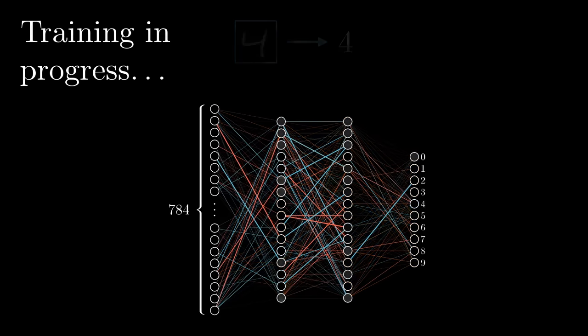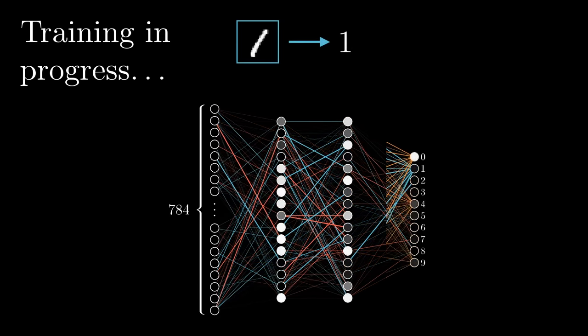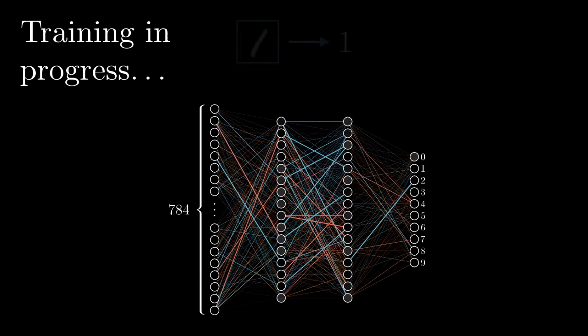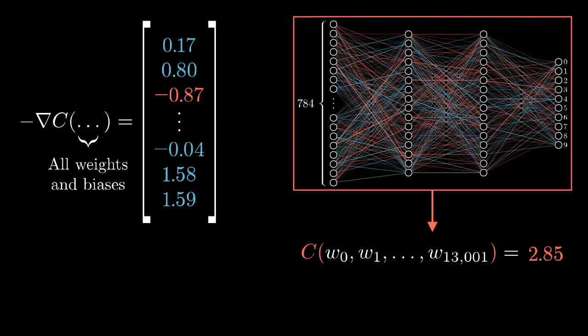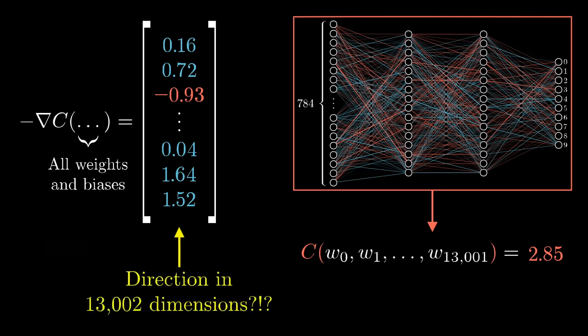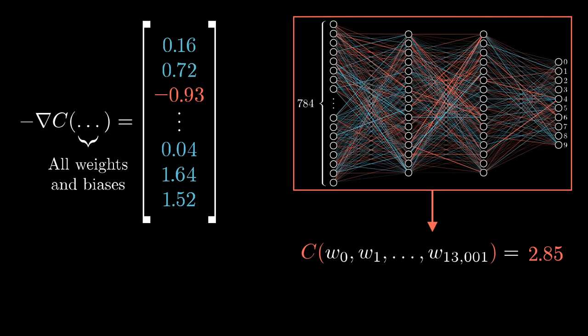Backpropagation, the topic of this video, is an algorithm for computing that crazy complicated gradient. And the one idea from the last video that I really want you to hold firmly in your mind right now, is that because thinking of the gradient vector as a direction in 13,000 dimensions is, to put it lightly, beyond the scope of our imaginations, there's another way you can think about it. The magnitude of each component here is telling you how sensitive the cost function is to each weight and bias.